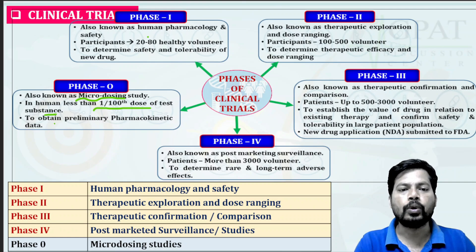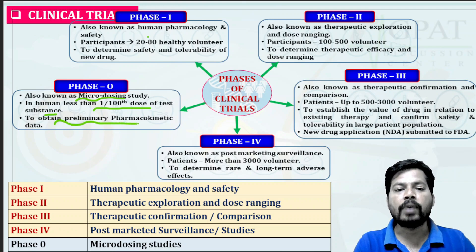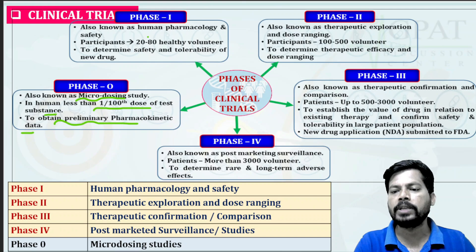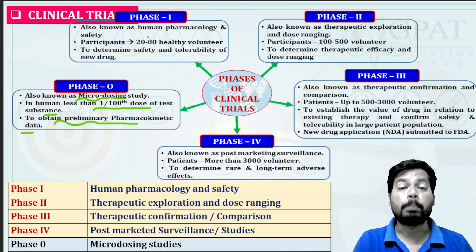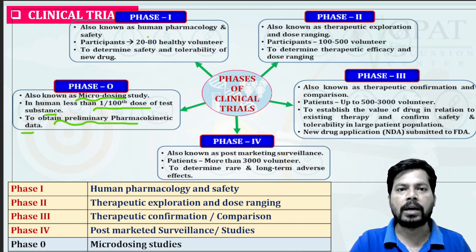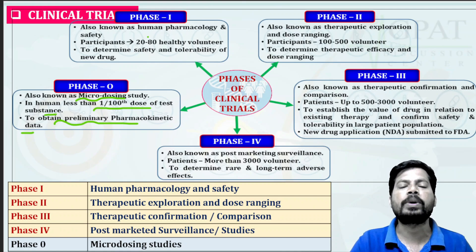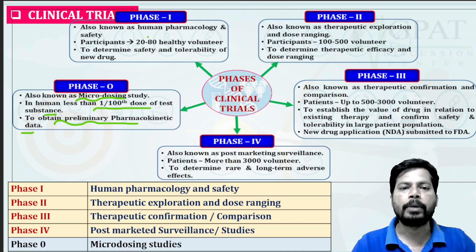In Phase Zero, pharmacokinetics and pharmacodynamics of the drug are observed in the patient. The main aim of Phase Zero is to obtain preliminary pharmacokinetic data — that is, how absorption, distribution, metabolism, and elimination of a particular drug occurs in the body.